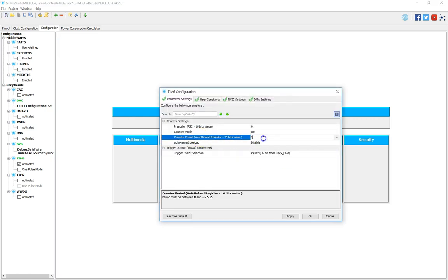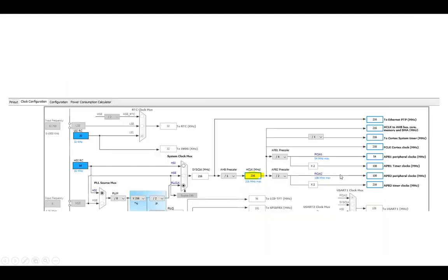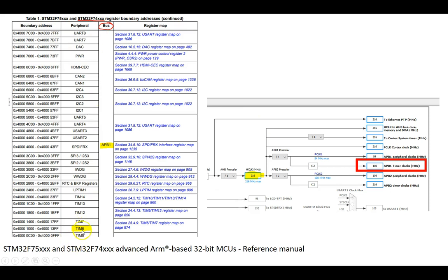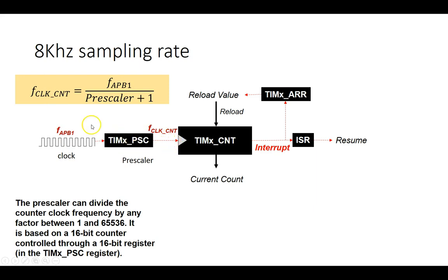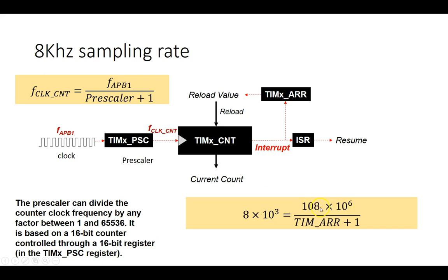For timer 6, I want a total of 8 kHz. A quick recap from a prior video: if I want to generate a timer 6 interrupt at 8 kHz, we saw that timer 6 was on the APB1 bus. The APB1 bus frequency is 108 MHz. With a prescaler of 0, the counter driving timer 6 is at 108 MHz. So 108 MHz divided by 8 kHz gives us the value we need to store in timer ARR, which is 13,499.